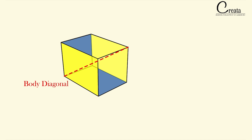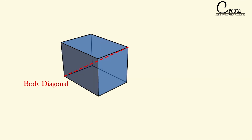This is the diagonal of the complete cuboid. If you observe, this is the longest length inside the cuboid that we can have. In competitive exams, the question is generally asked about the length of the longest rod that can fit inside the cuboid. So this body diagonal is the maximum length of a rod that we can accommodate inside the cuboid.